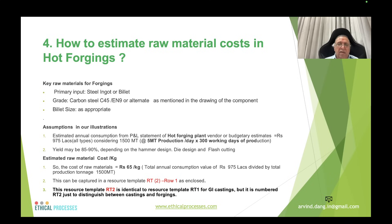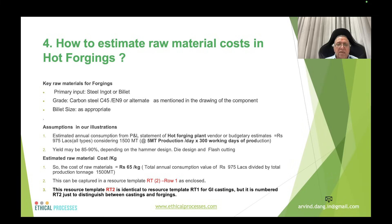The annual consumption cost of ₹975 lakhs divided by 1,500 metric tons works out to ₹65 per kg. This is shown in the resource template, numbered RT2 — identical to RT1 used for grey iron casting costing but numbered RT2 for clarity and distinction.